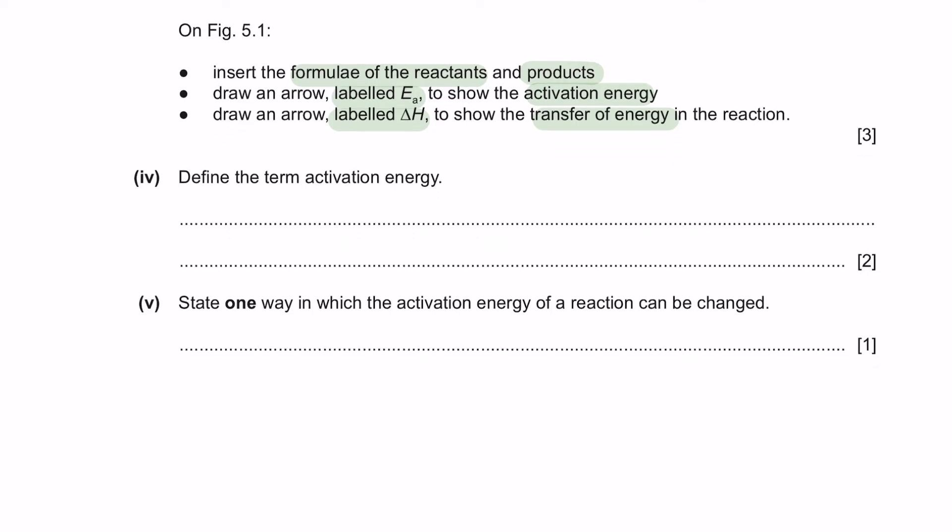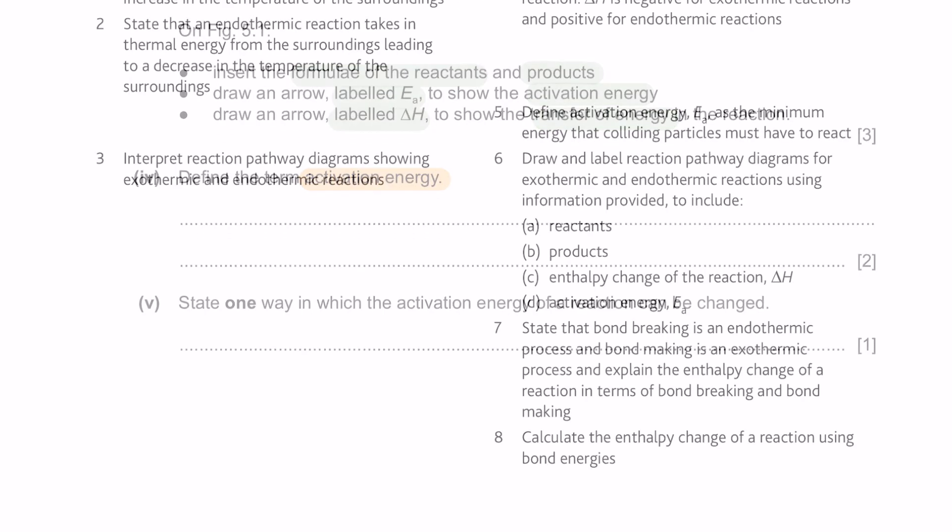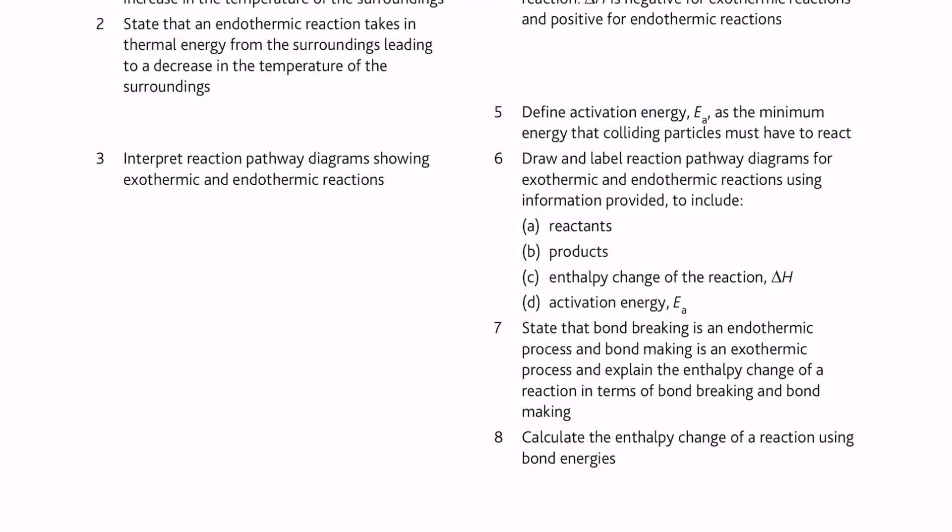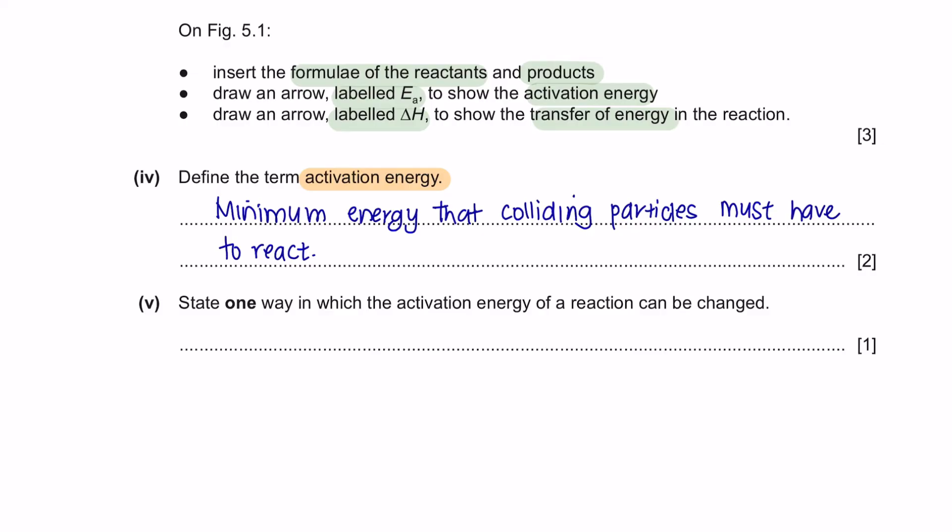Next, question 4. Define the term of activation energy. I'm going to define it by referring to the GCSE specification. It says that activation energy is the minimum energy that colliding particles must have to react. Next, part 5. State one way in which the activation energy of a reaction can be changed. This is based on rate of reaction. In rate of reaction, you will learn that there are certain factors that can be done to speed up the reaction. One way of doing that is by adding catalyst. How does catalyst help in speeding up the rate of reaction is that catalyst can help reduce the activation energy. So we can change that by using a catalyst.